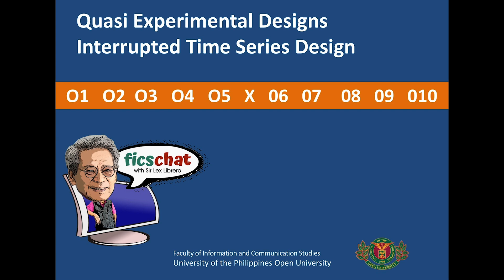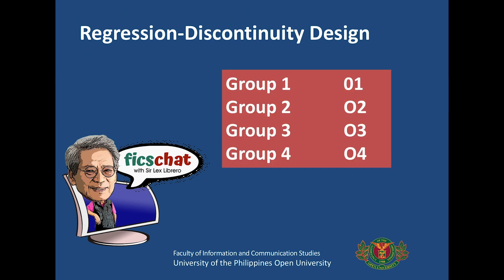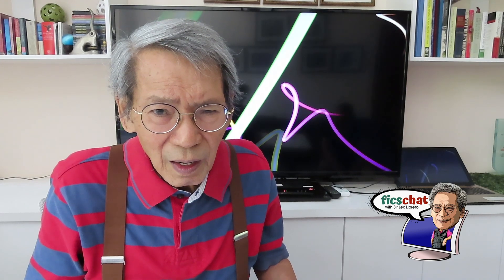That is the interrupted time series design. There is another one called regression discontinuity design. What we do here is that we select different groups from the population or from the same sample. In each of these groups, we will have one observation, and then we compare the observations.